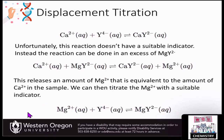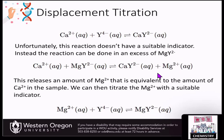We can also do what's called a displacement titration. Calcium can react with yttrium and form a resulting anion; however, this reaction doesn't have a suitable indicator. So you can perform this reaction in excess of magnesium-yttrium, and this will release an amount of magnesium equivalent to the same amount of calcium. This is called a displacement titration because the calcium is displacing the magnesium, and the magnesium becomes the free ion. If we titrate the magnesium and figure out how much magnesium ion has formed, the stoichiometric relationship between magnesium and calcium allows us to calculate the calcium concentration.